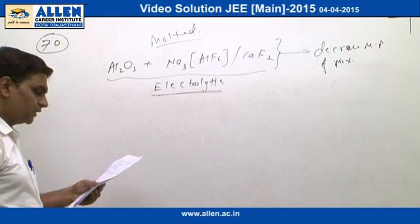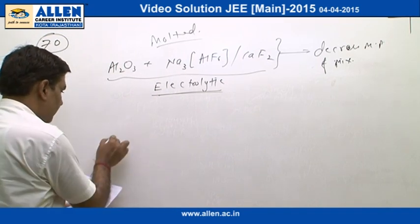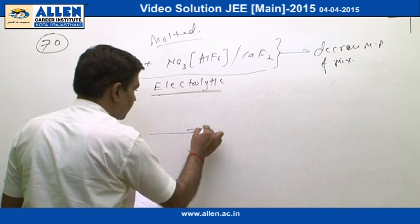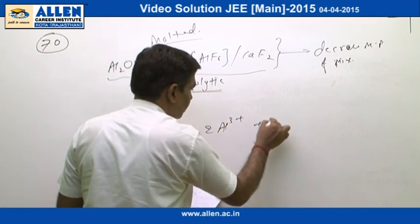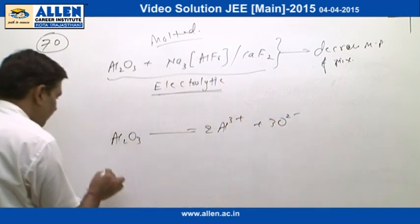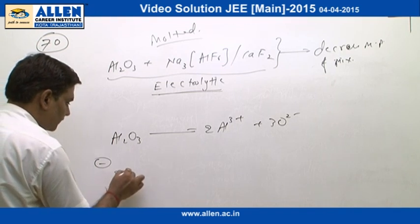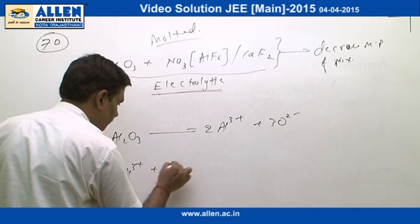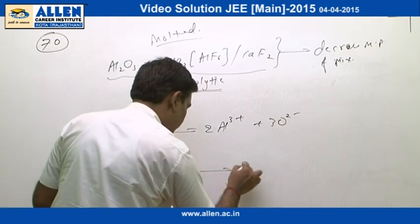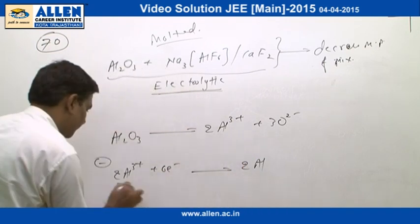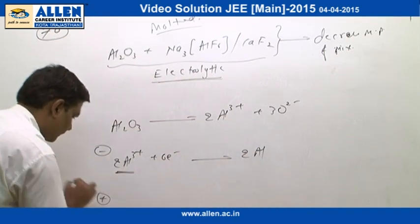In the overall process, Al2O3 dissociates to Al^3+ plus 3O^2-. At the negative terminal, 2Al^3+ is converted to Al. It is reduction of Al^3+. At the